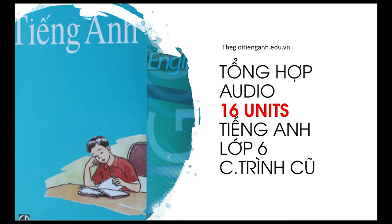Section C: Families. Listen and read, then answer the questions. This is my family. We are in our living room. There are four people in my family: my father, my mother, my brother, and me. This is my father. He is 40. He is an engineer. This is my mother. She is 35. She is a teacher. My brother is eight. He is a student.